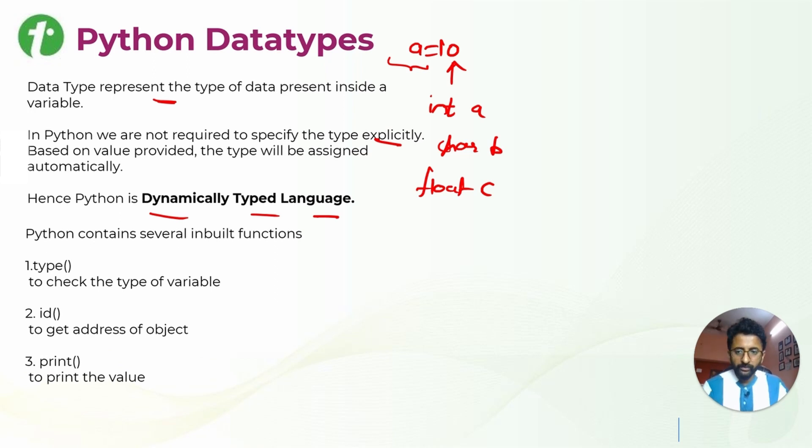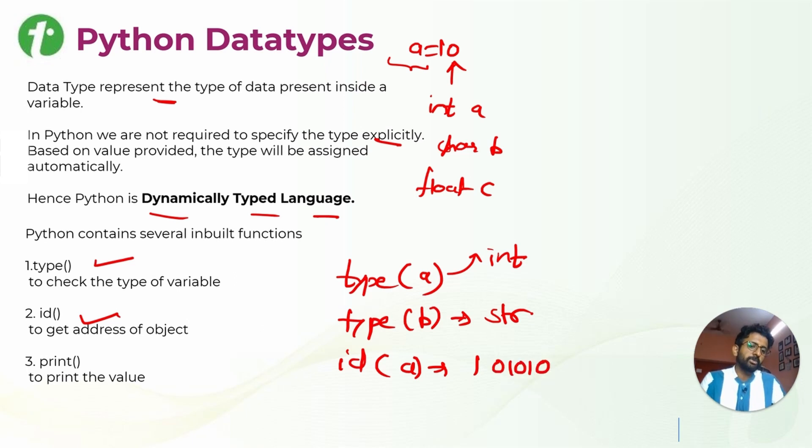Before moving forward, I would like to pay your attention to different types of inbuilt functions. Type is one of the functions - whenever you say type of a, it will tell you that it is an integer. Id will give you an object address. When you call id of a, it will give you the exact location that particular variable is stored inside memory. And print function we have already seen - whatever you define inside a print function in double quotes, it will give you an output.